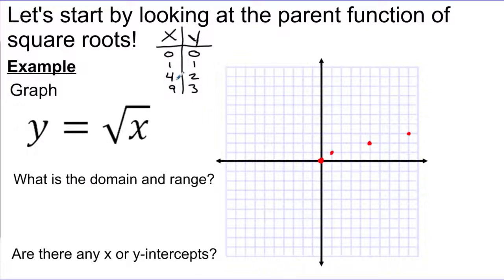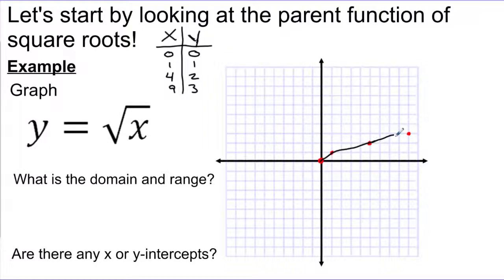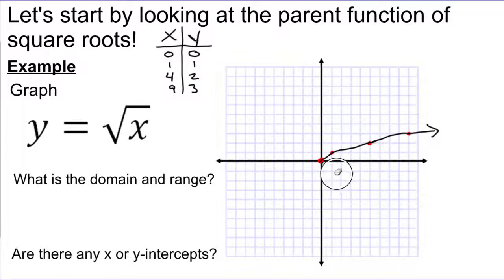I purposely skipped values like 5, 6, 7, 8 because they don't give nice outputs, but I could plug those in. However, I can't plug in any negative numbers at all. The square root of negative 9 gives no real number answer — it doesn't work. So this is as far as I can go — I can't go down or to the left without getting into an undefined area. The graph looks like a half-U shape, kind of like a parabola on its side, but we can only see the upper half.